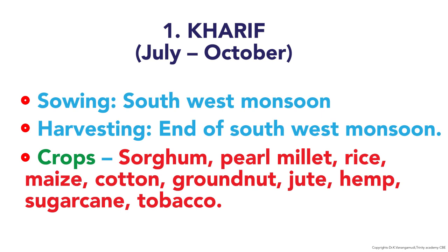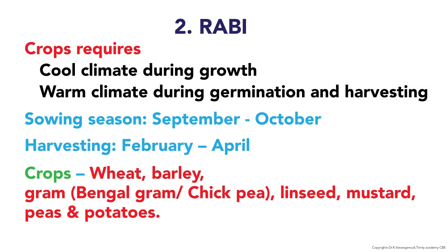Kharif crops are sown during the southwest monsoon and harvested at the end of the southwest monsoon. Rabi season crops include wheat, barley, gram (Bengal gram or chickpea), linseed, mustard, peas, and potatoes. These crops require cold climate during growth and warm climate during germination and harvesting.